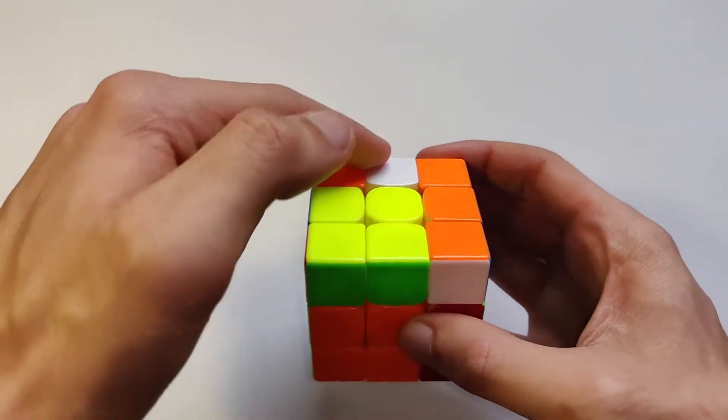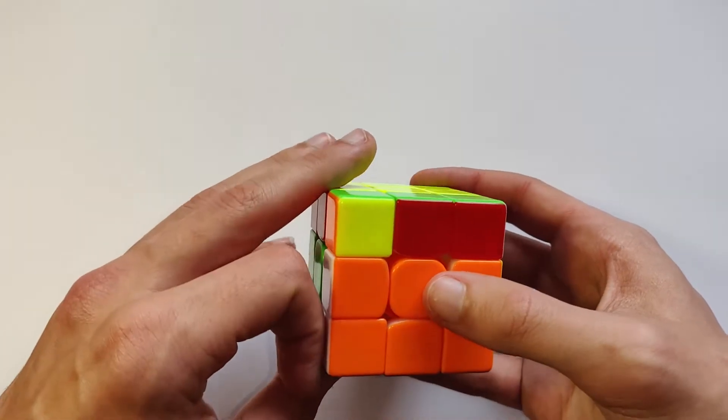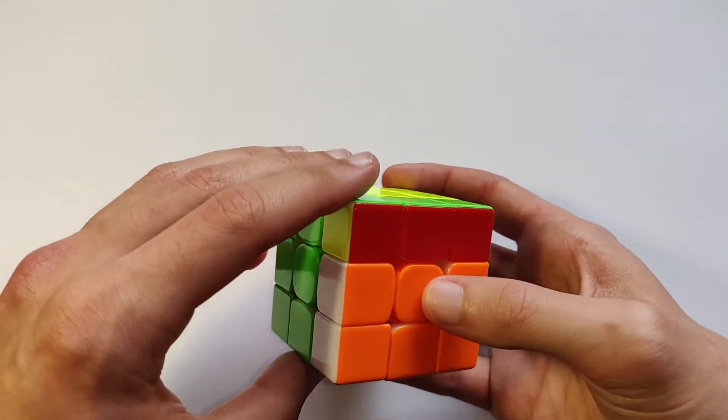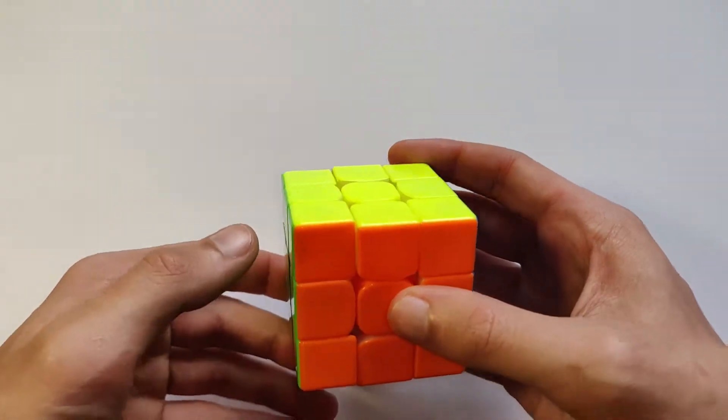What this does is it pairs these together just like that. And then we go down, then sexy move, then in, and then you should just be able to finish this off. F2, U2, just like that.